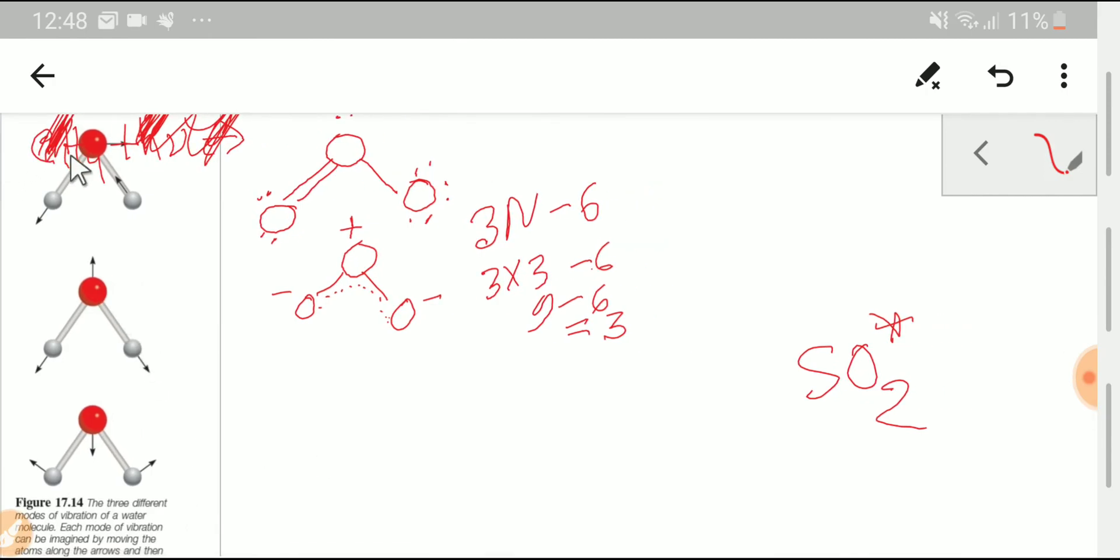This is the vibration of ozone. For this vibration, we are getting the change in bond length. If bond length changes, then the dipole moment will change. If dipole moment changes during vibration, then the molecule will be IR active, and IR active molecules are greenhouse gases. So we can say that ozone is a greenhouse gas.